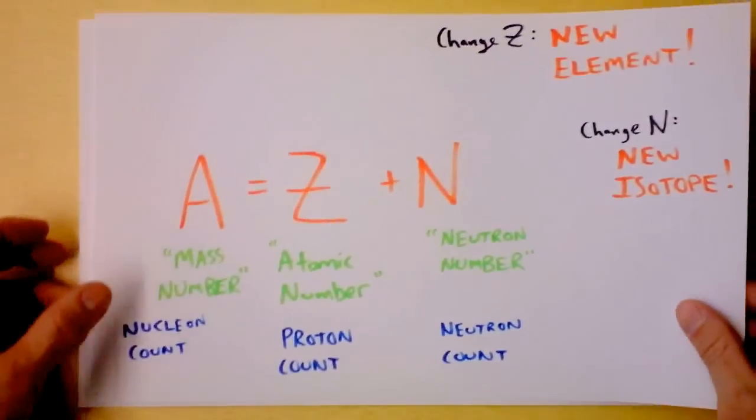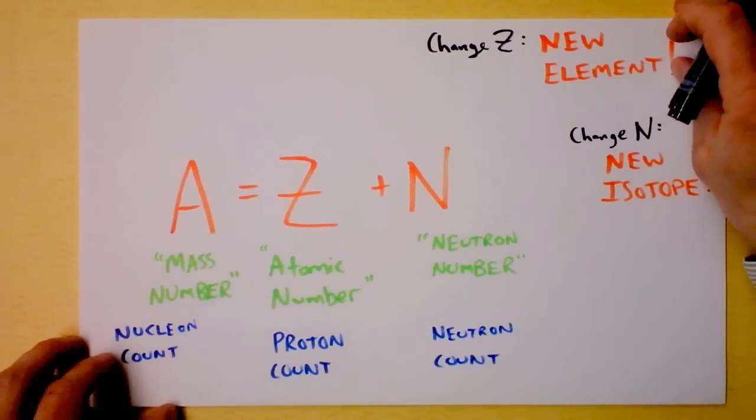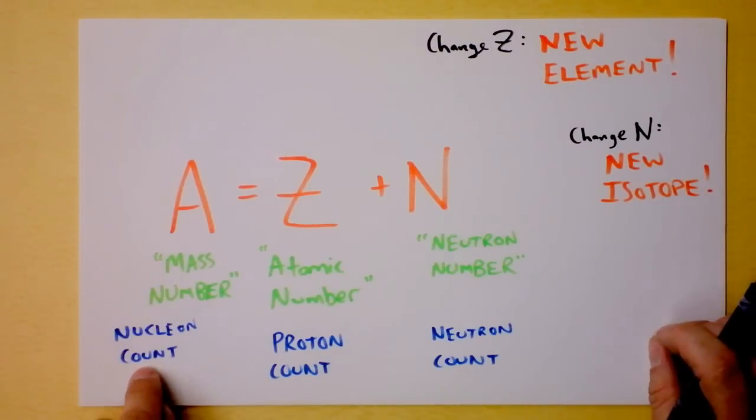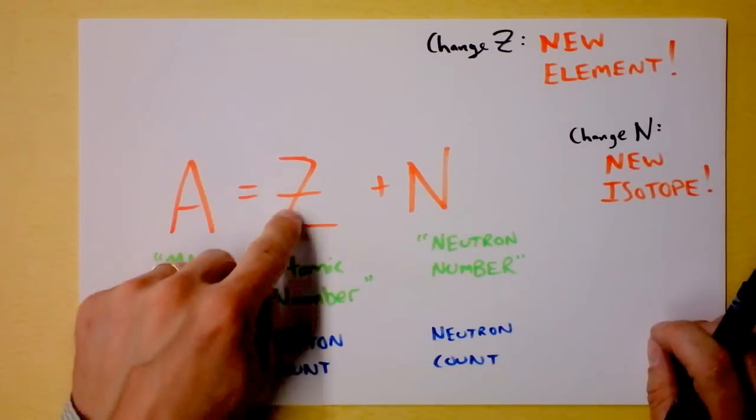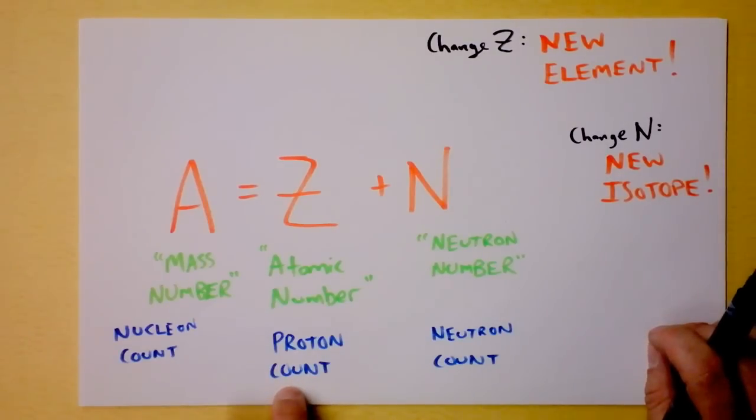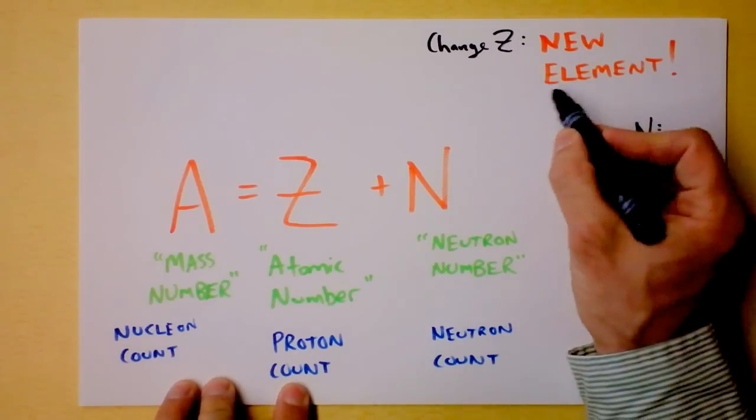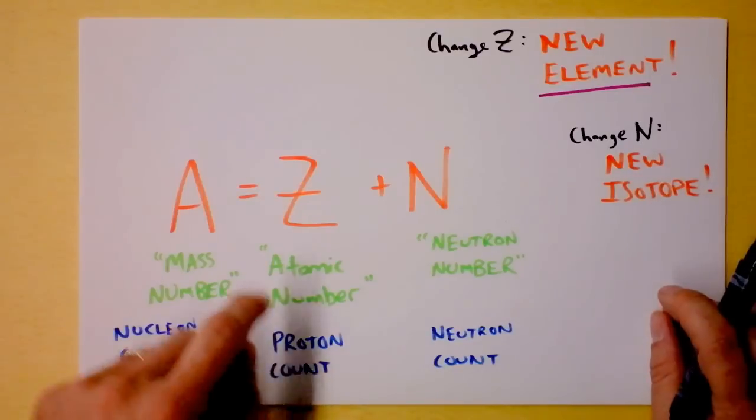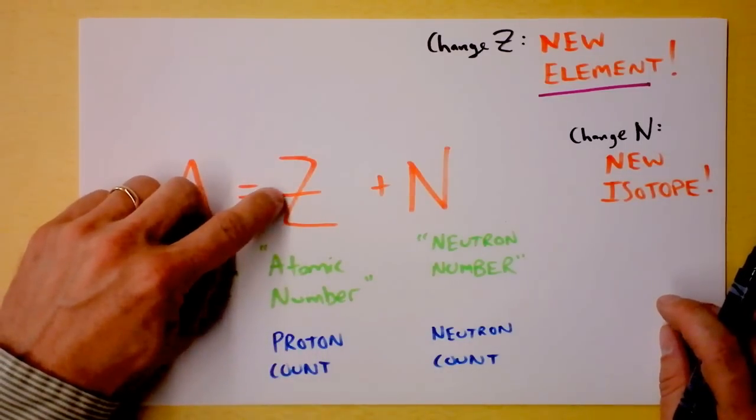Next up, this equation. Very simple. Mass number is the count of nucleons. Atomic number Z is the count of protons. Atomic number, if you change it, you will get a new element. That's what makes elements different from one another, the amount of positive charge that's in the nucleus.